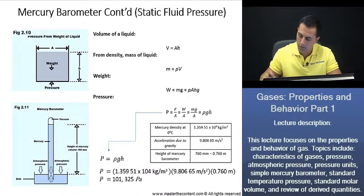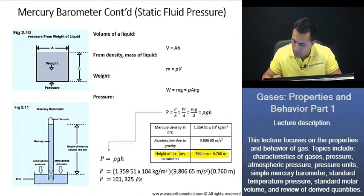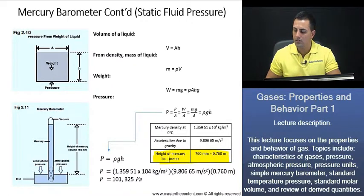Wonderful. And we left off right here with the height of the mercury barometer. We had found that to be 760 millimeters, or we could say 0.760 meters.